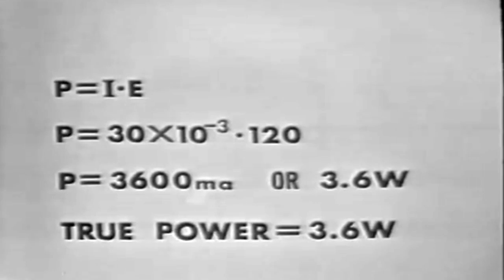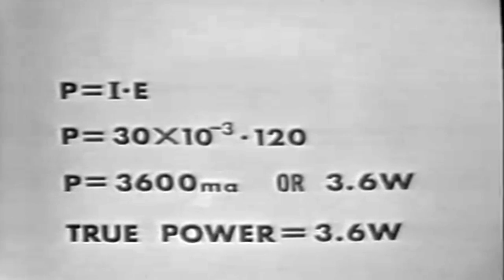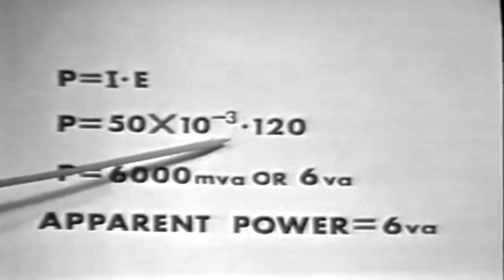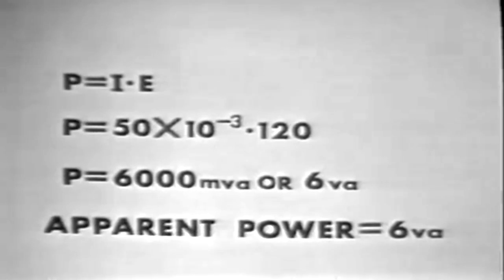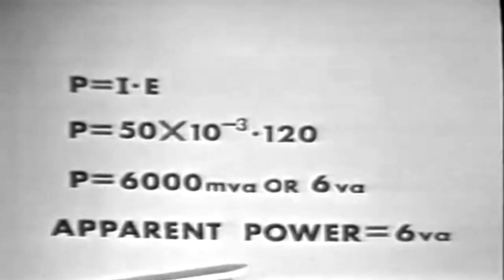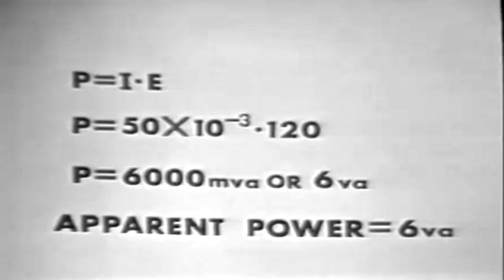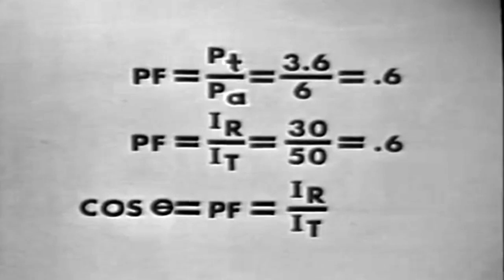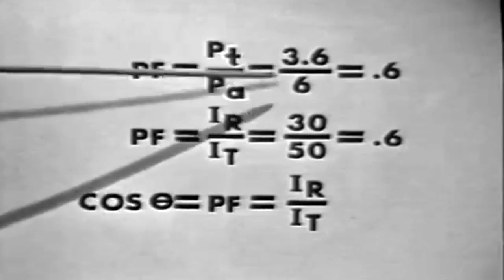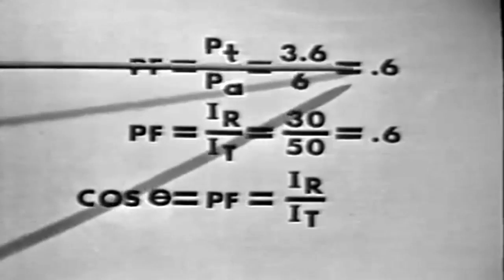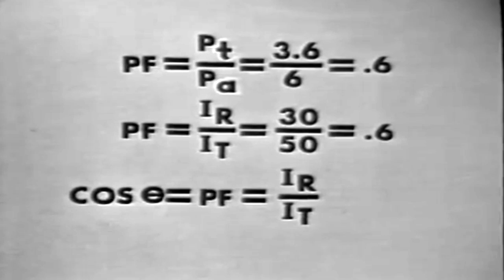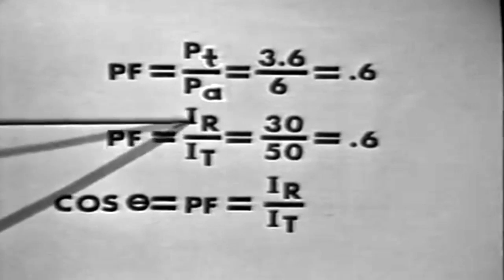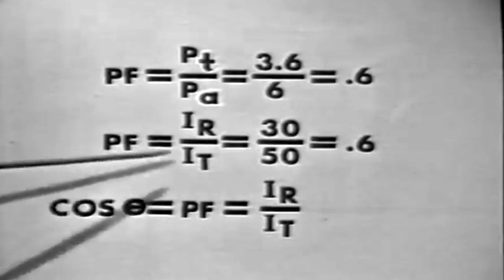This is true power — the power actually dissipated by the resistor. However, applying the power formula to the entire circuit using total current of 50 milliamps and EA of 120 volts gives 6 volt-amperes of apparent power, measured in volt-amperes rather than watts because not all of this power is dissipated as heat. The ratio of true power to apparent power is the power factor: 3.6 over 6 equals 0.6. Equivalently, IR over IT — 30 over 50 — also equals 0.6. The power factor for our circuit is 0.6.